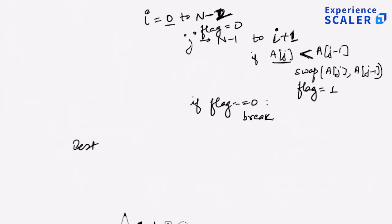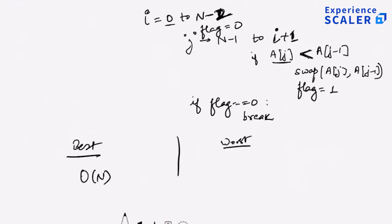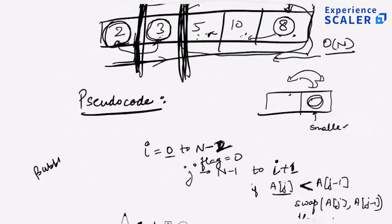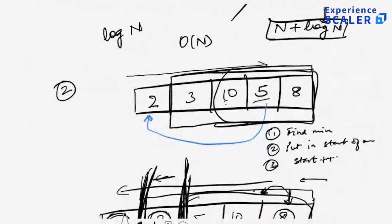Let's look at what is the best and worst case complexity of this algorithm. Best case is O(n) — my array was already sorted or almost sorted; I do this iteration, flag becomes zero, I break. Worst case is when it is reverse sorted — every single time I have to do a lot of swaps, and that is O(n²). This is called bubble sort. Finding the smallest element and moving it to the beginning is called selection sort — that's the approach just before bubble sort I had talked about.